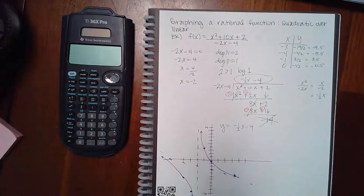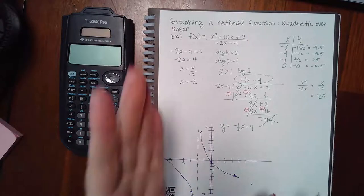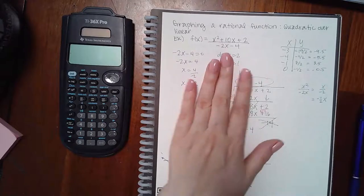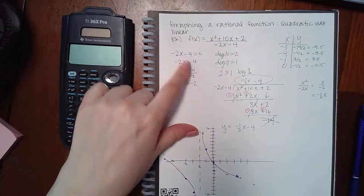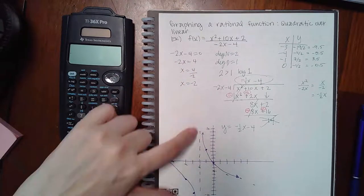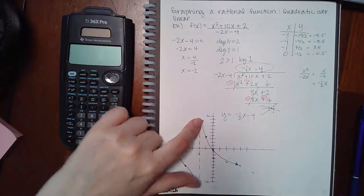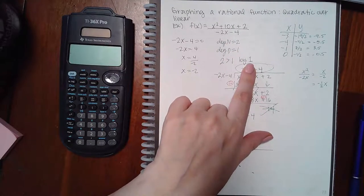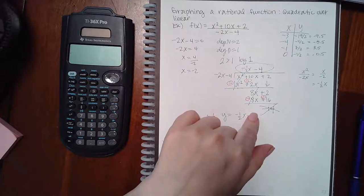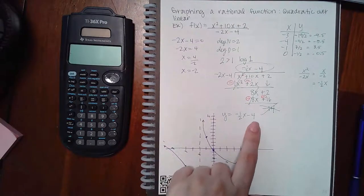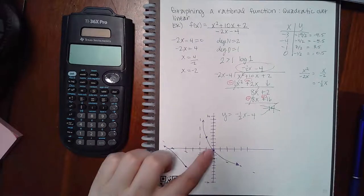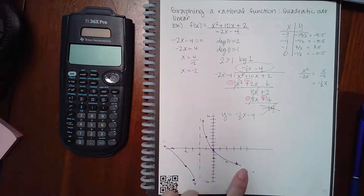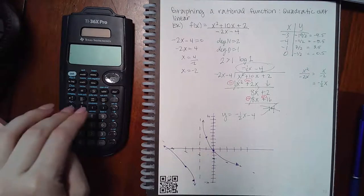Now they want us to graph rational functions — it's the same process. Find your vertical asymptote, which helps you get the chart, then compare your degrees to figure out whether you have a horizontal or slant asymptote. Setting the denominator equal to 0 and solving, I got negative 2, so I drew the asymptote at negative 2. The degree of the numerator is 2 and the degree of the denominator is 1 — 2 is bigger than 1 by 1 only, so I did long division to find the slant asymptote. I ended up with negative 1 half x minus 4. To graph that, I go to negative 4 on the asymptote, put a dotted line, then go down 1 and over 2 to get a couple more points. In Aleks, you just hit the dotted line and it'll draw that slanted line for you.